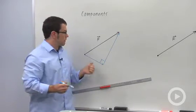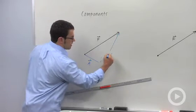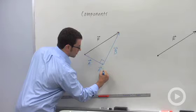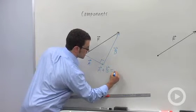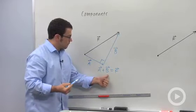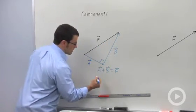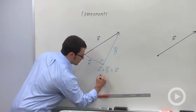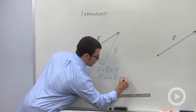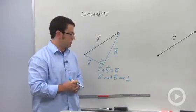So those are the only two requirements for vectors to be components. Let's call this vector a and this one b. So we see that a plus b equals F. So that's the one requirement for components. The two components have to add up to the original vector. And the other one is that the two are perpendicular. a and b are perpendicular. Sometimes called orthogonal when you're talking about vectors.